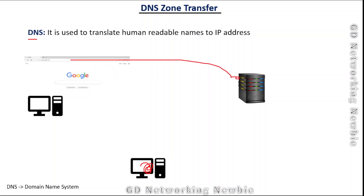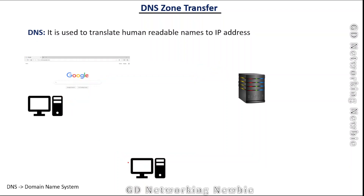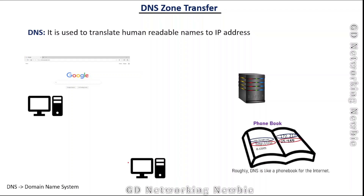The request first goes to DNS, DNS gives us the IP address, and then using that IP address, this computer can directly reach the destination computer. So this is the basic operation of DNS. Now, the DNS server holds domain names and their IP addresses — roughly we can say that DNS is like a phone book for the internet, and this database is saved in the server machine.